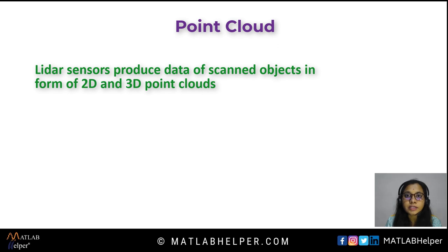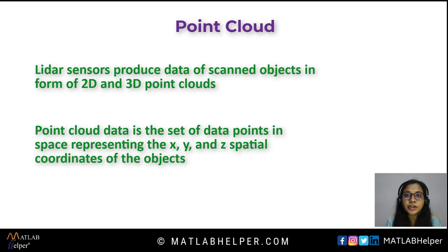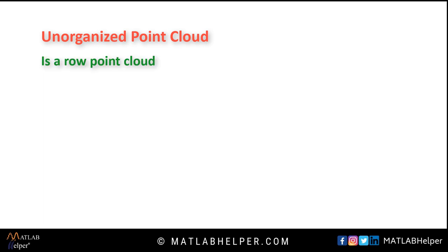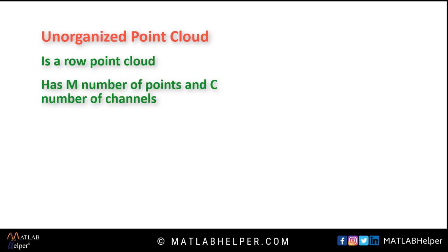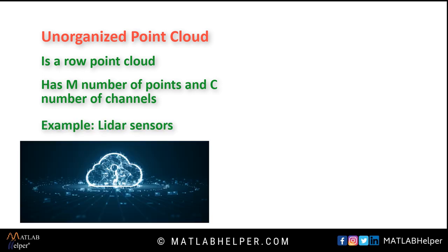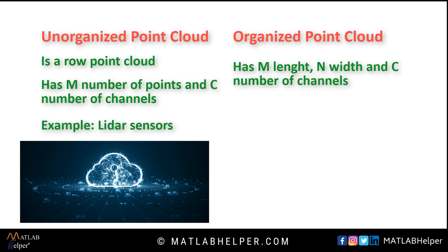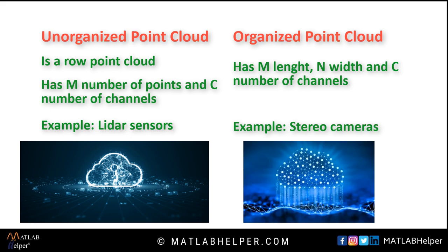LIDAR sensors produce data of scanned objects in the form of 2D and 3D point clouds. A point cloud is a set of data points in space representing the X, Y, and Z spatial coordinates of the object. There are two types of point cloud data. The unorganized point cloud is a raw point cloud with M number of points and C number of channels — some LIDAR sensors produce this type. The organized point cloud has length M, width N, and C number of channels; stereo cameras are an example of this type.